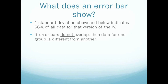So, if the error bars do not overlap with any other error bars from any other versions of the independent variable, then we can say that the majority of the data for that one group is different from all of the others that you're comparing it against.